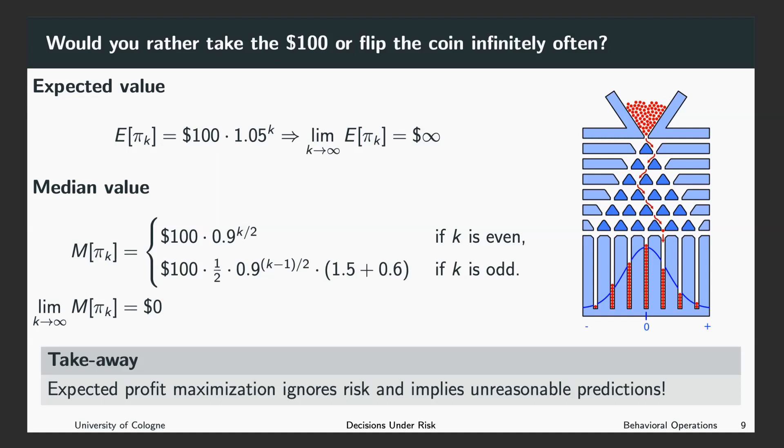So here's the important takeaway is that there might be a big difference between the expected profit and the attractiveness of a certain investment. Here the expected profit maximization, which we often apply when we think about risk-neutral individuals, risk-neutral firms investing in something, ignores that there might be a big risk. And in this case it implies an unreasonable prediction, because in most cases you are worse off by investing many times into this investment. So here the takeaway from looking at the Bernoulli or St. Petersburg paradox is that expected profit maximization might yield unreasonable predictions.